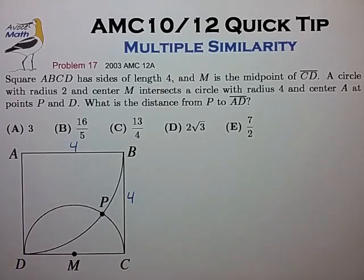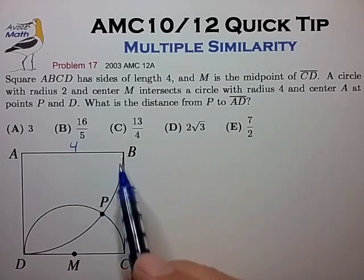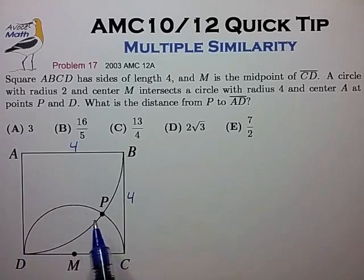Okay, so looking at this figure we have a square of side length 4. We have two circle segments intersecting at point P, and that suggests some natural auxiliary lines.